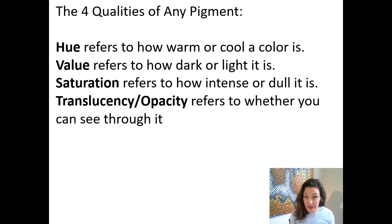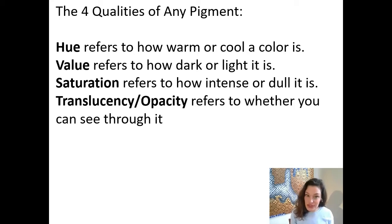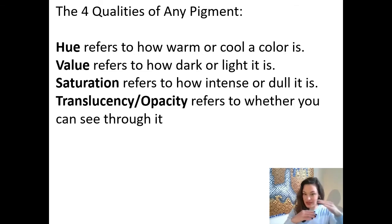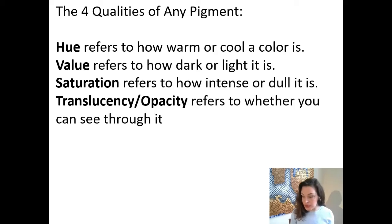Now let's talk about the four qualities of any pigment. The first three are the same as any color: hue — how warm or cool it is; value — how dark or light it is; and saturation — how intense or dull it is. With pigments, we also have to think about translucency and opacity. Certain paints will completely cover what's underneath, while others are see-through, so the color underneath and the color on top combine to create the ultimate color we see. Drawing with colored pencils over white paper will create a different ultimate color than drawing over black paper; because they're translucent, it would probably produce a darker color.